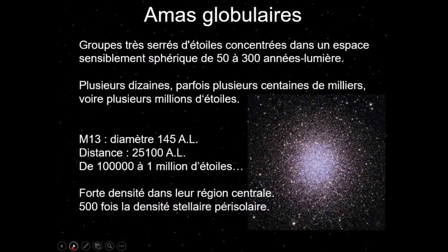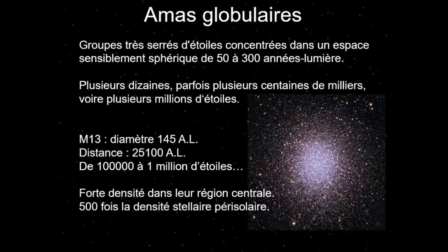Qu'est-ce qu'un amas globulaire ? C'est un groupe très serré d'étoiles, concentré en pelote dans un espace à peu près sphérique. On retrouve entre 50 et 300 années-lumière de diamètre. La Voie Lactée fait 100 000 années-lumière de diamètre pour le disque, 10 000 d'épaisseur. Ici, on est à 300 années-lumière à peine. Ce sont donc des petites boules à l'échelle de la galaxie.